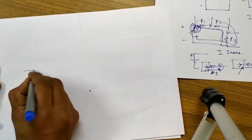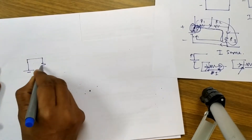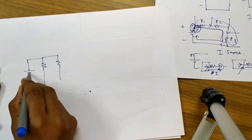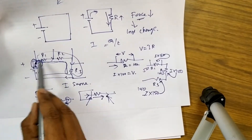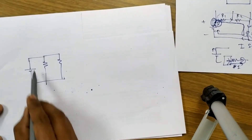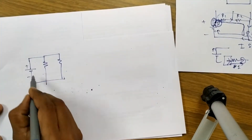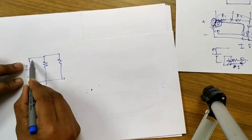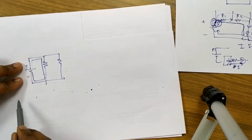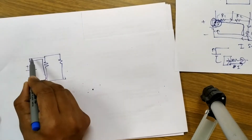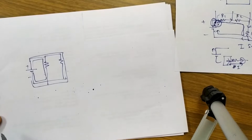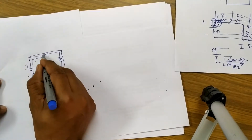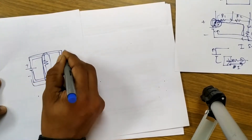Now, if I consider a parallel circuit, in the series circuit combination we had only one path for current flow, but in a parallel circuit we have two paths. The force between the two terminals will take one path, and the same force will go through the other path as well. So current can flow through this path or that path.